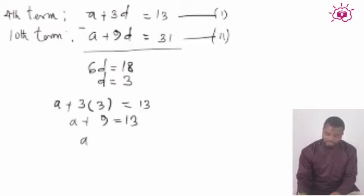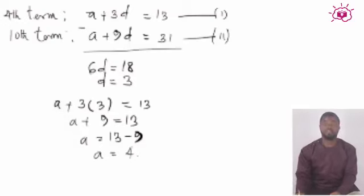Collecting like terms, that would be 13 minus 9, that would yield 4. So we have our first term as - sorry, our first term as 4 and our common difference as 3.